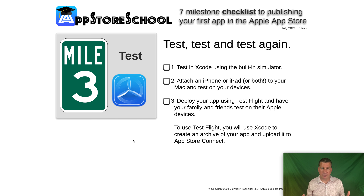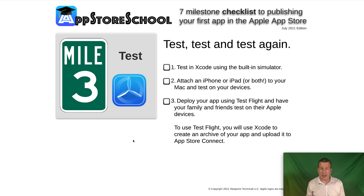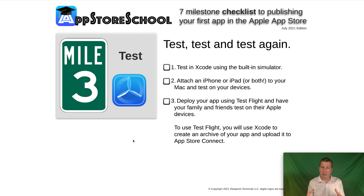Milestone 3 is testing your app once it's built, and there are three steps to that. First, test it in Xcode using the built-in simulator, which lets you select which device you want to test on — from a very old iPhone to the latest and greatest iPad. The interface pops up and you can click around on a screen that looks just like the selected device. Once you're happy in the simulator, you move on to a real device — connect your iPhone or iPad to your computer and run your app on one or preferably both to see how it looks and feels.